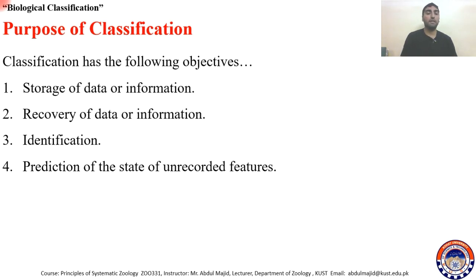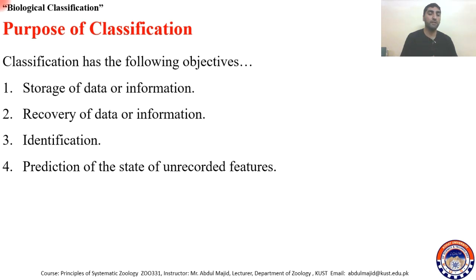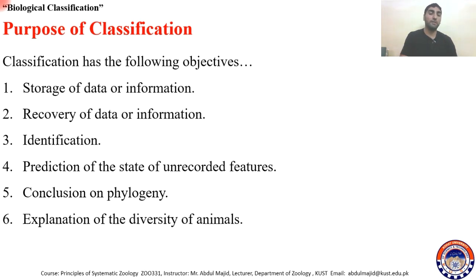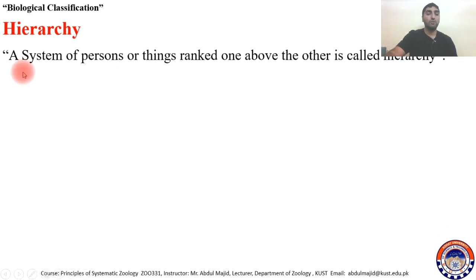Another purpose is to predict the state of unrecorded features. For example, if we classify an animal as a vertebrate placed in phylum Vertebrata, we can predict many characteristics: it has a vertebral column, a notochord, gill slits, a post-anal tail, and many more features. Also, classification allows us to draw conclusions on phylogeny — to what lineage certain organisms belong. It also explains the diversity of animals.